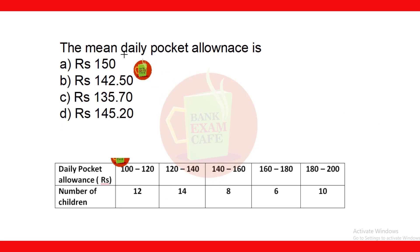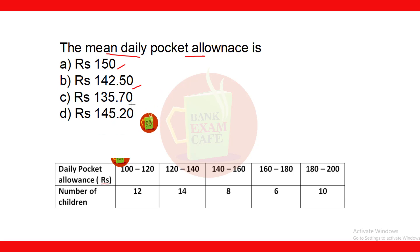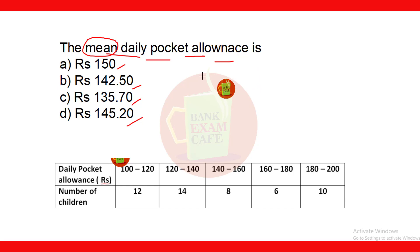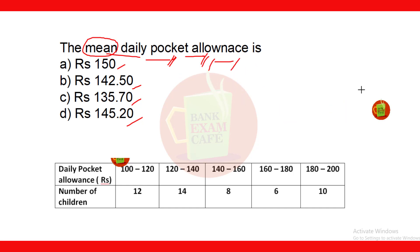Now, this question is for you: the mean daily pocket allowance is ₹150, ₹142.50, ₹135.70, or ₹145.20. Please solve this and write your answer in the comment box. I hope you enjoyed this video — if yes, please like it, share it with your friends, and do not forget to subscribe the channel. Thank you very much for watching.